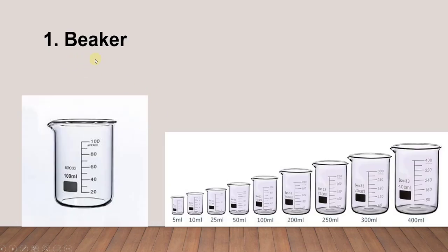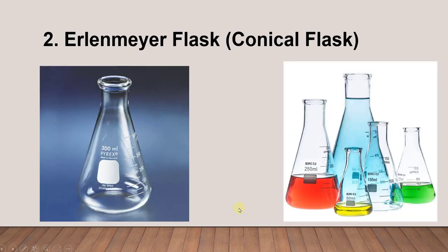First is the beaker. We have different sizes for different volumes of solution. Next is the Erlenmeyer flask, also called a conical flask.